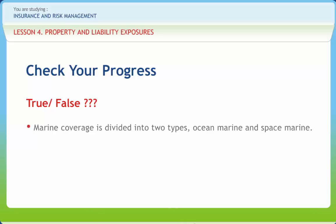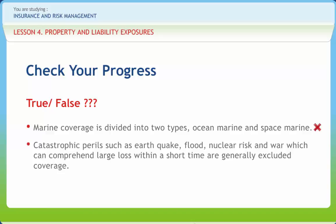Let us check if we have understood the concepts discussed. Marine coverage is divided into two types, ocean marine and space marine — right or wrong? Wrong. Catastrophic perils such as earthquake, flood, nuclear risk and war, which can comprehend large loss within a short time, are generally excluded from coverage — right or wrong? Right.